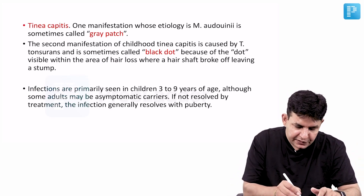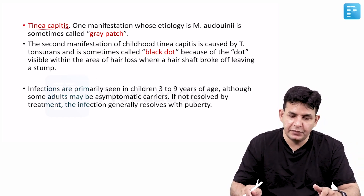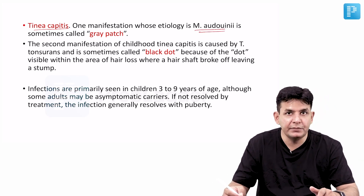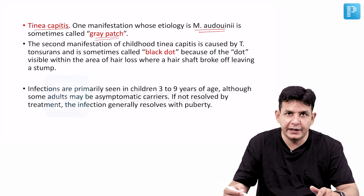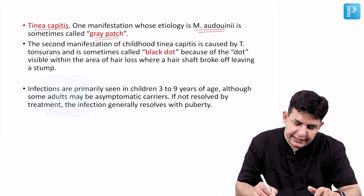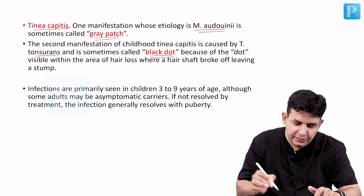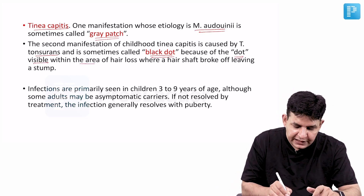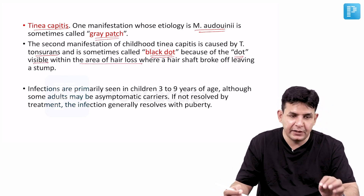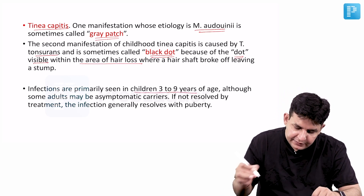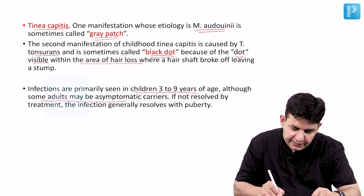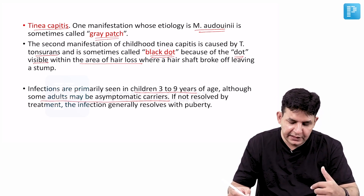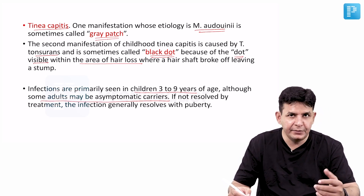Tinea capitis — the dermatophytic infection of the scalp — most common etiology is Microsporum audouinii, also called gray patch. The second manifestation of childhood tinea capitis is caused by T. tonsurans, also termed black dot, because the dot is visible within the area of hair loss. Infections are primarily seen in children 3 to 9 years of age, though some adults may be asymptomatic carriers. This infection generally resolves with puberty.